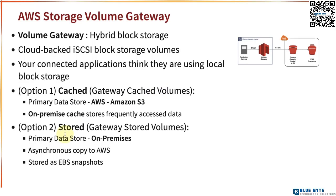With gateway cached volumes, the primary data store is AWS — specifically Amazon S3. Instead of retrieving all data from S3, you maintain an on-premise cache so that frequently accessed data is cached on-premises. The alternative is gateway stored volumes, where the primary data store is on-premises. Your applications talk directly to the on-premise primary data store, and an asynchronous copy is made to AWS, stored as EBS snapshots.